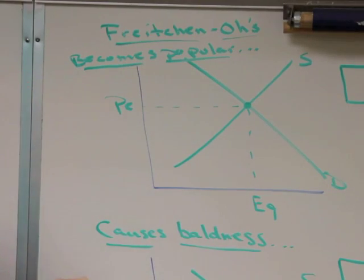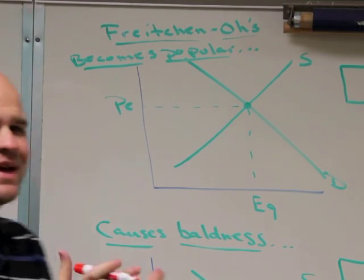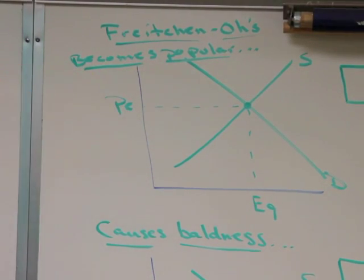Tracing down, we have our equilibrium quantity. Tracing to the side, we have the price equilibrium, basically the price that producers and consumers agree.